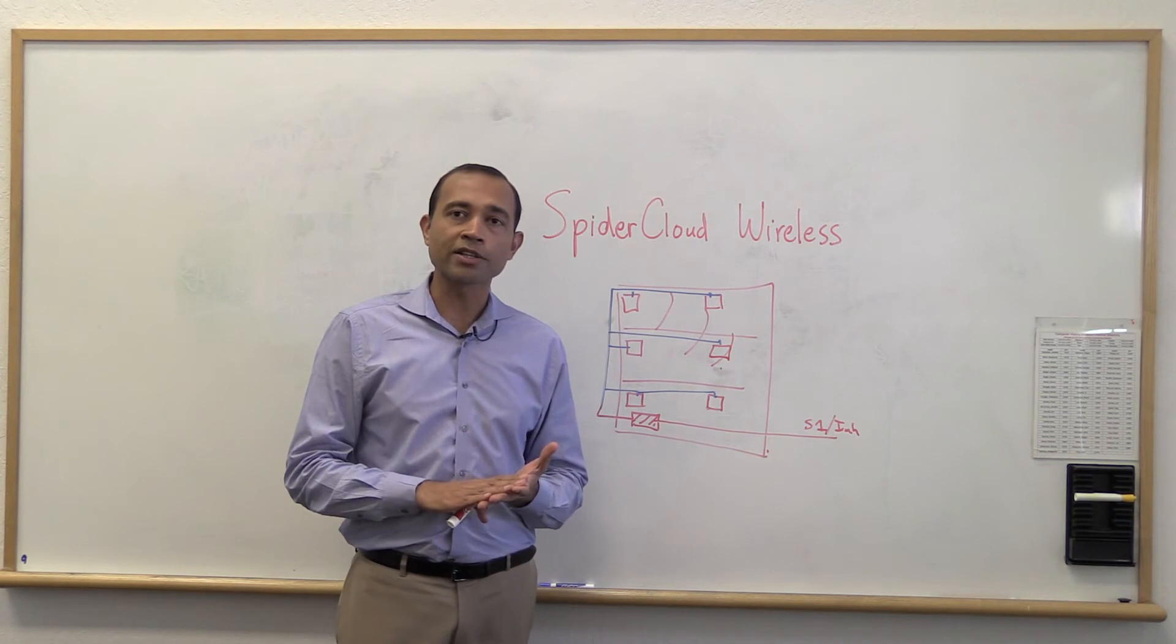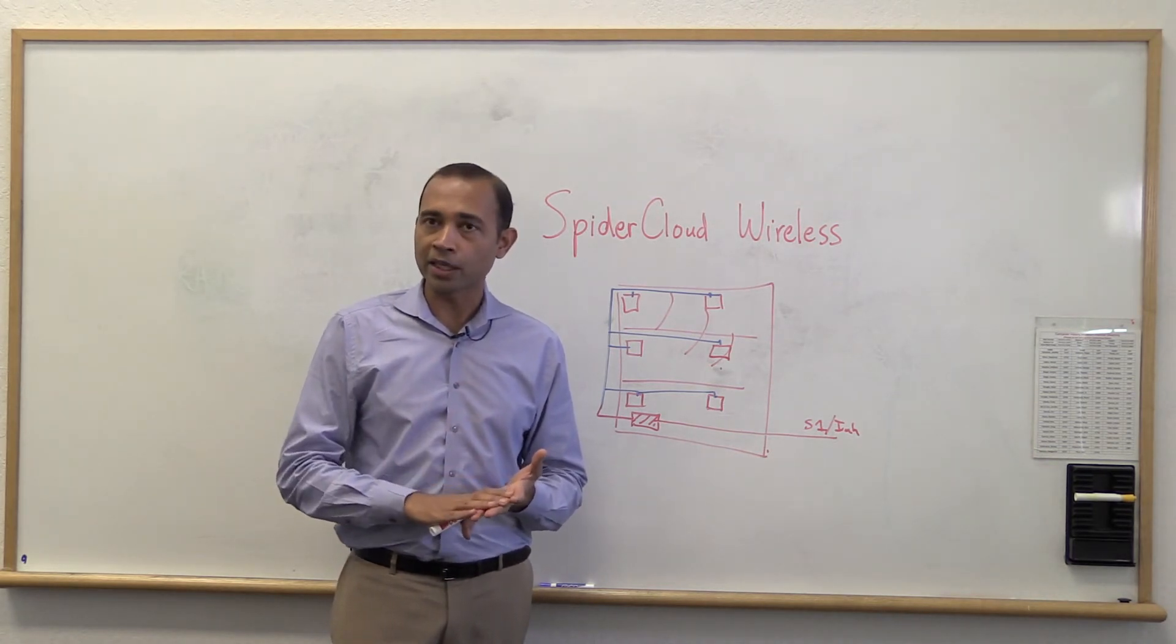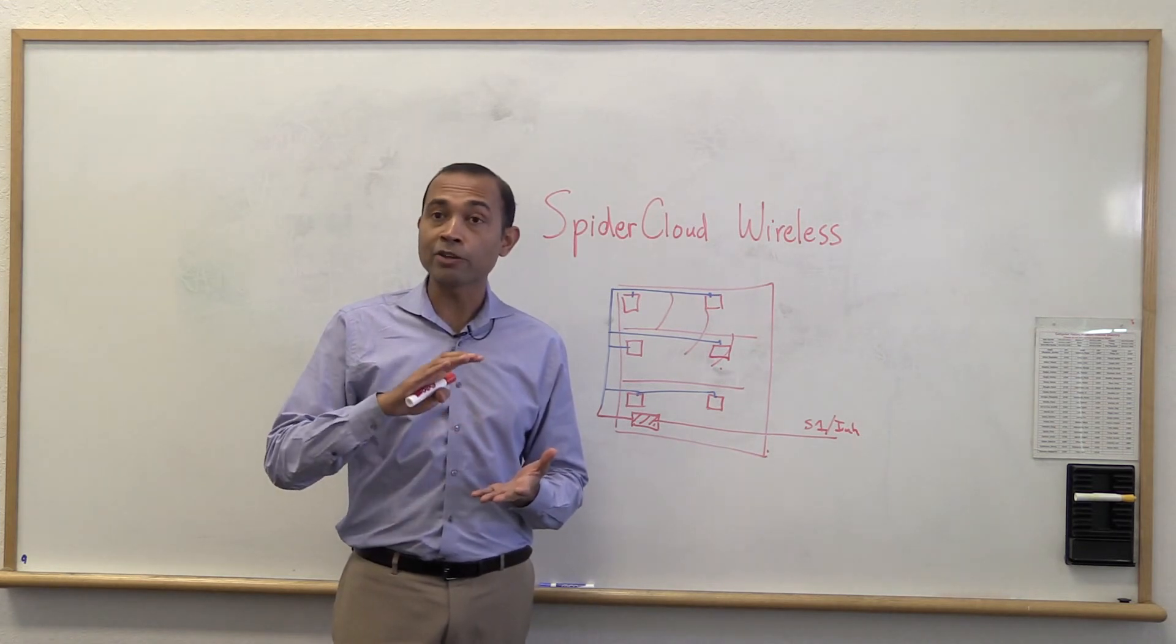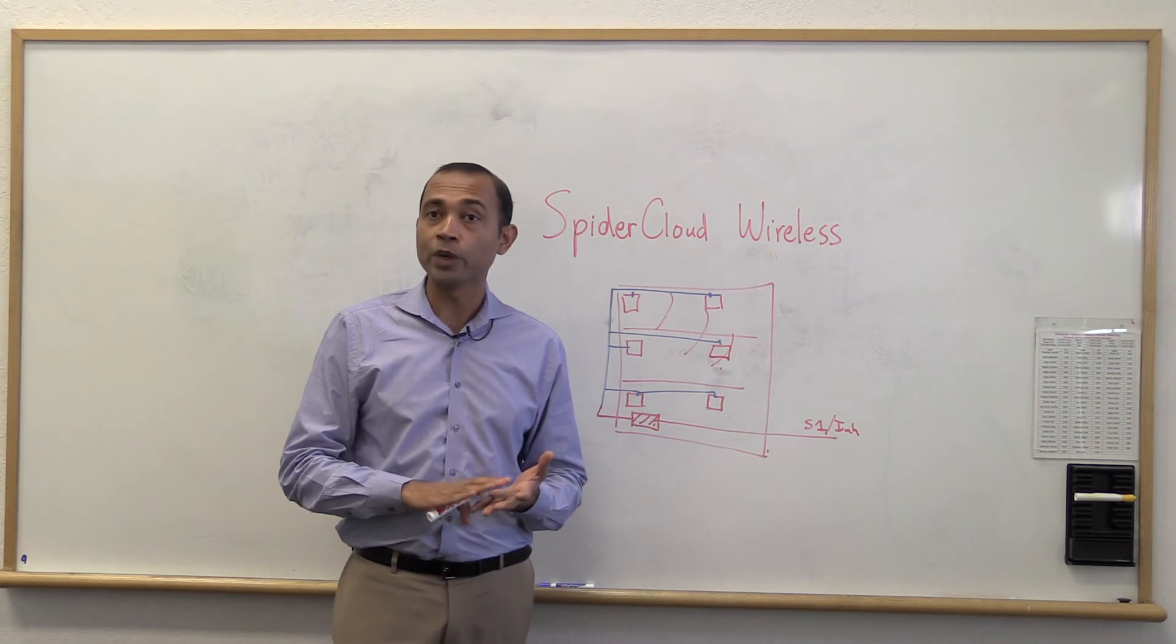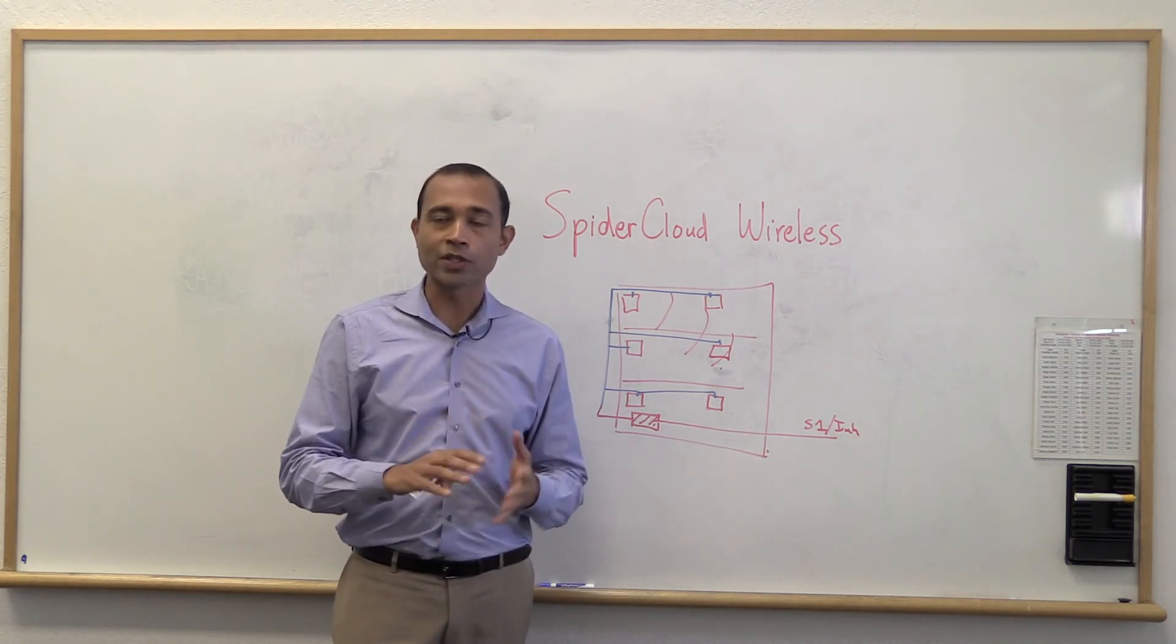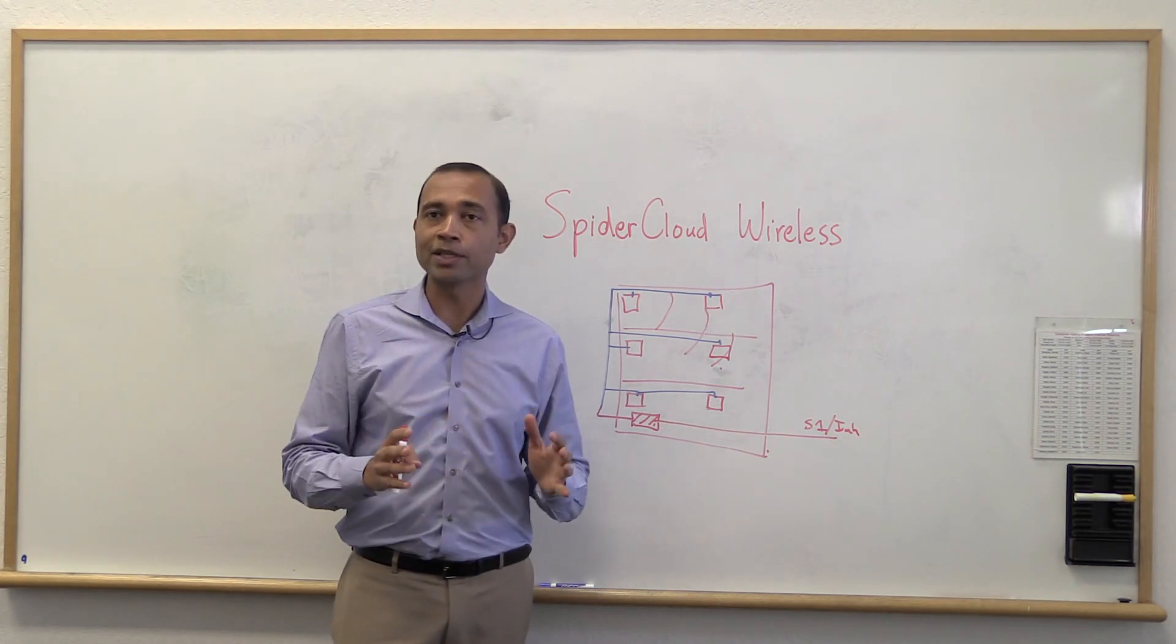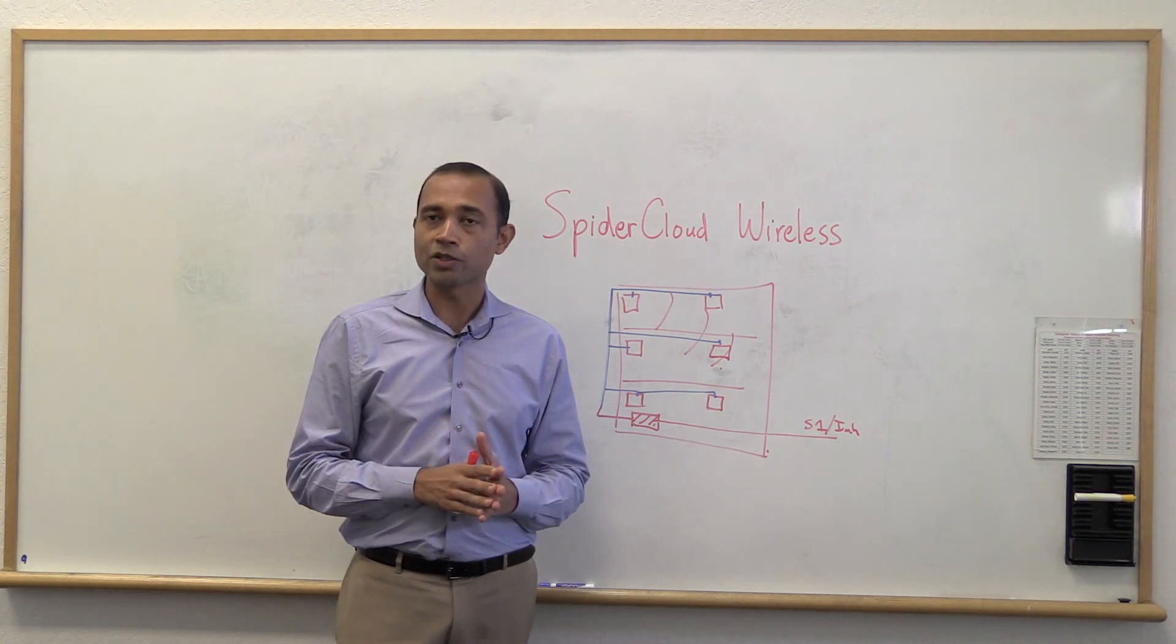And the end result is that you have a small cell network delivering 3G and LTE deployed in a building in a matter of days. Some of our networks have actually been deployed in a matter of a few weeknights, connected back to your operator's core network, providing service to thousands of people, making sure that you have gigabits of throughput, that you can provide a very high quality experience to your folks.